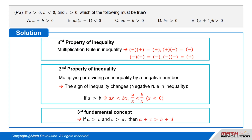The third fundamental concept in inequality: the sum of two larger quantities will be greater than the sum of two smaller quantities. If A is greater than B and C is greater than D, then A plus C is greater than B plus D.